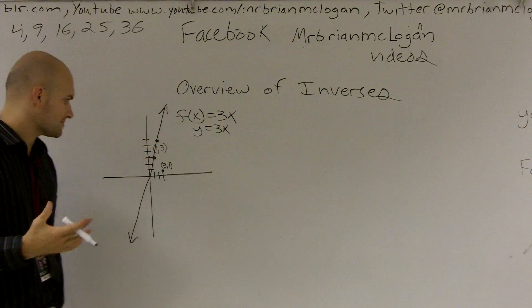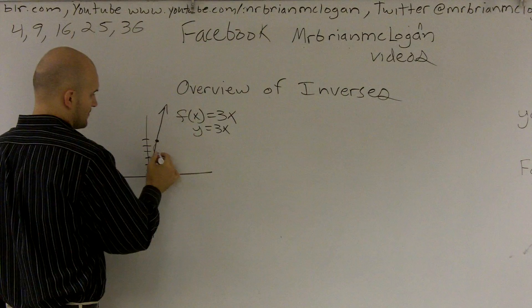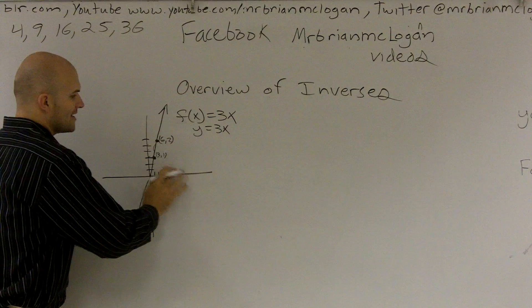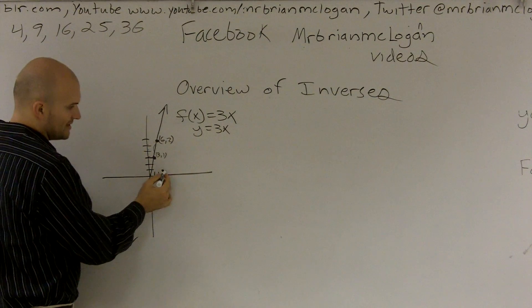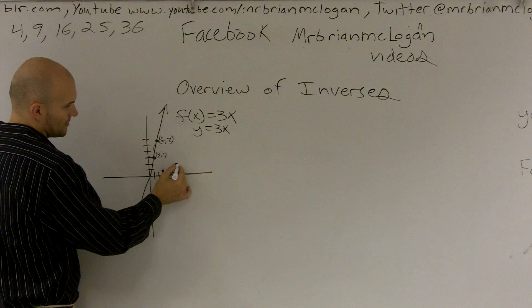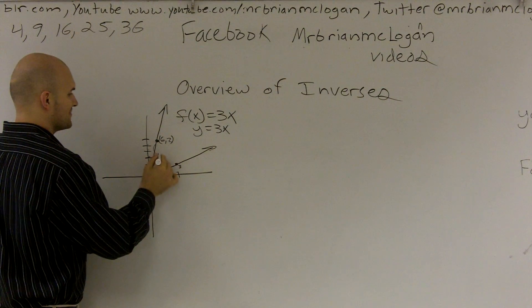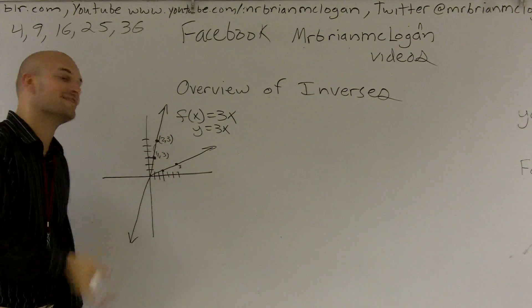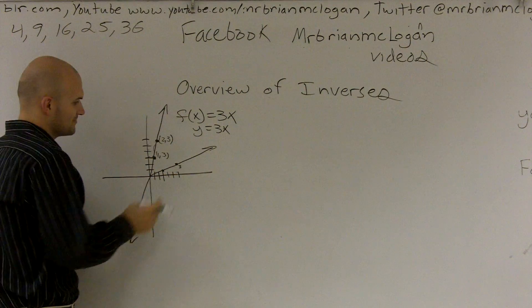Now, if we were going to look at the inverse, I know this next point is going to be 3, 1, and 6 comma 2. Now, if I was going to look at the inverse without actually finding the inverse algebraically, what I would notice is the inverse is going to be the exact opposite on the x axis. So it would be over 1, up 3, over 2, up 6. My apologies, I made some mistakes there. It's been already a long day.